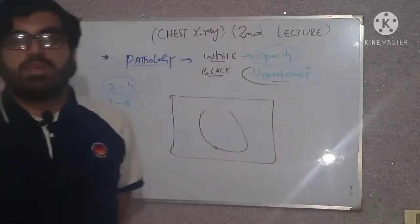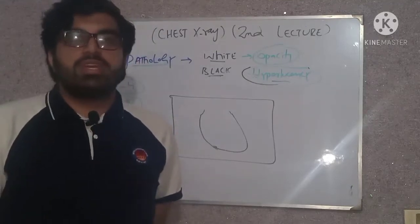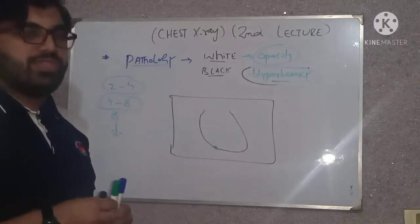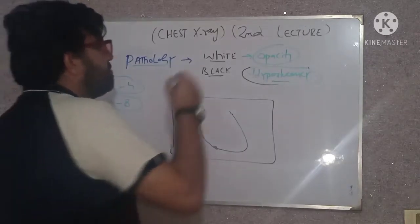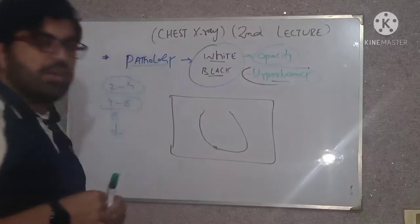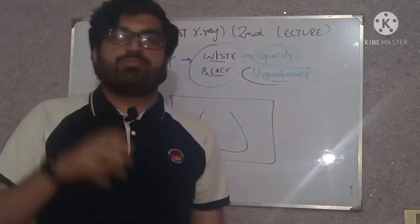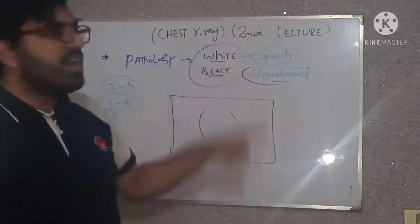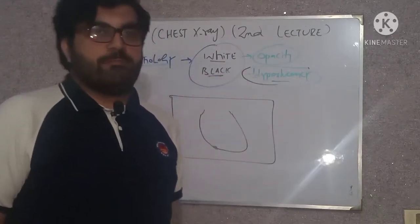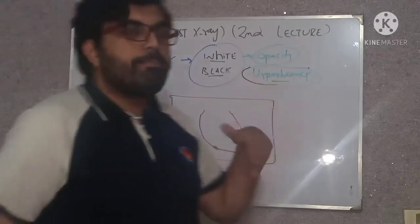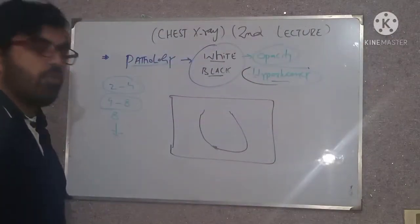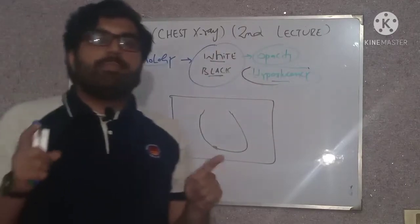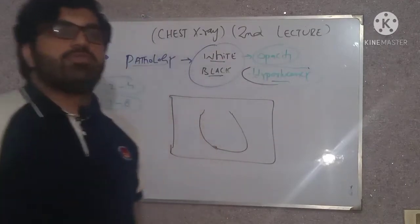After applying the basic quality criteria, we move toward the pathology. Which pathology can you expect in a chest X-ray? The answer is: either the pathology is white or the pathology is black. The white pathology is called opacity, and the black pathology is called hyperlucency.